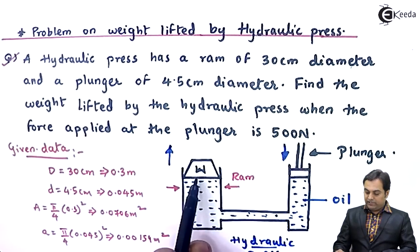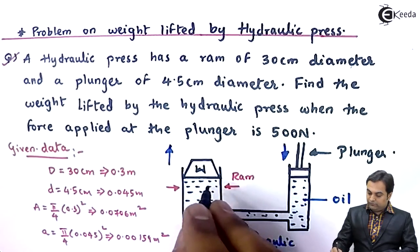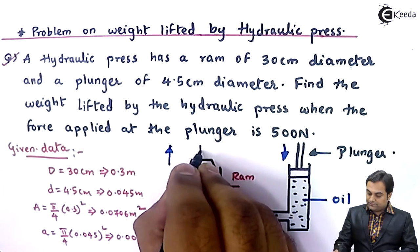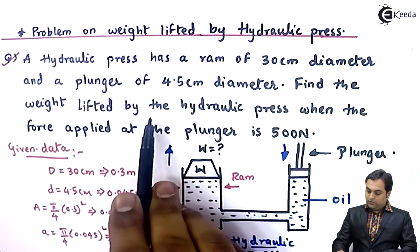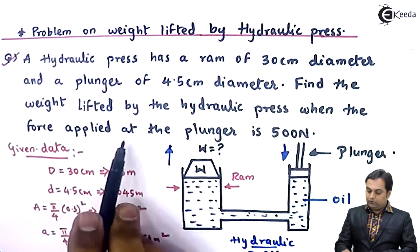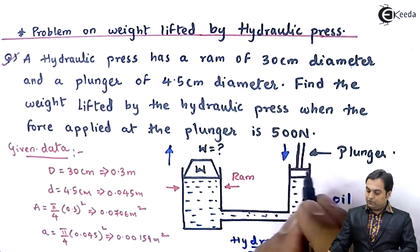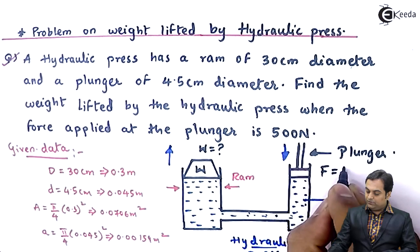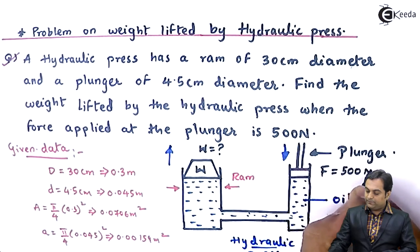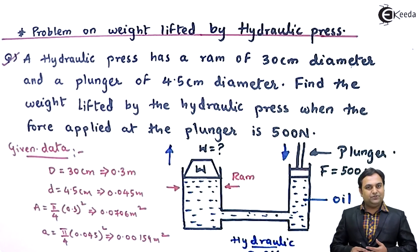Now reading the question again: we have to find the weight W lifted by the hydraulic press when the force applied at the plunger is 500 Newton. So W is the unknown, and the force F at the plunger is 500 Newton. That is the data given; let us start with the solution.